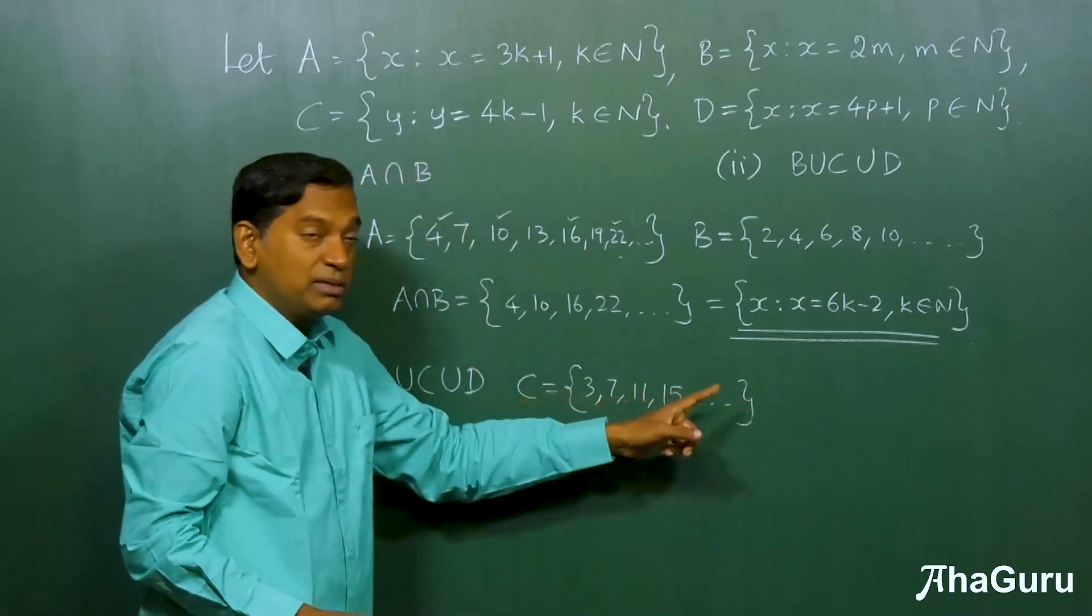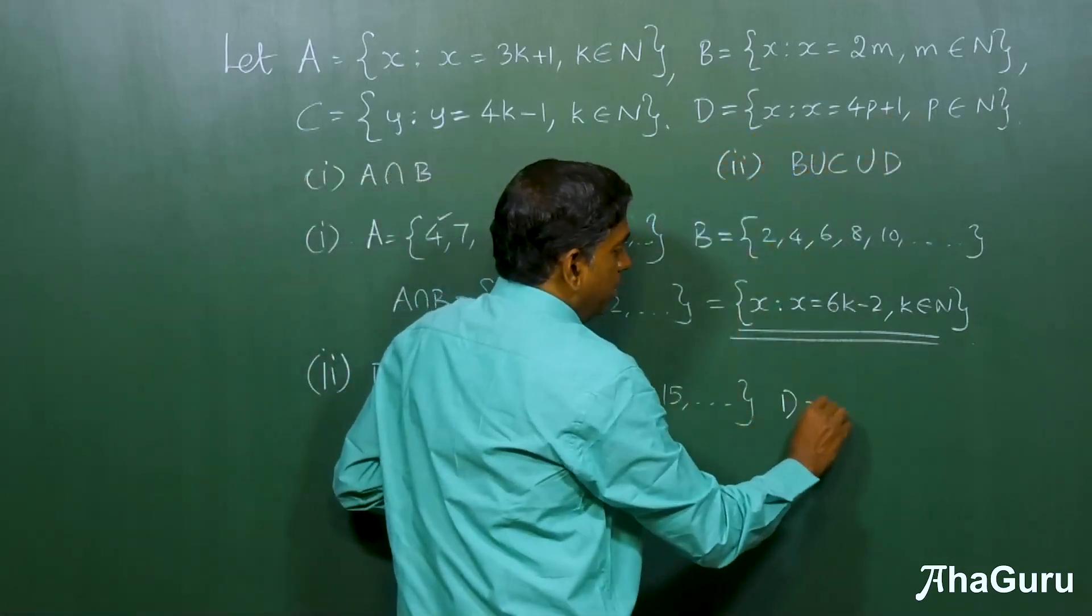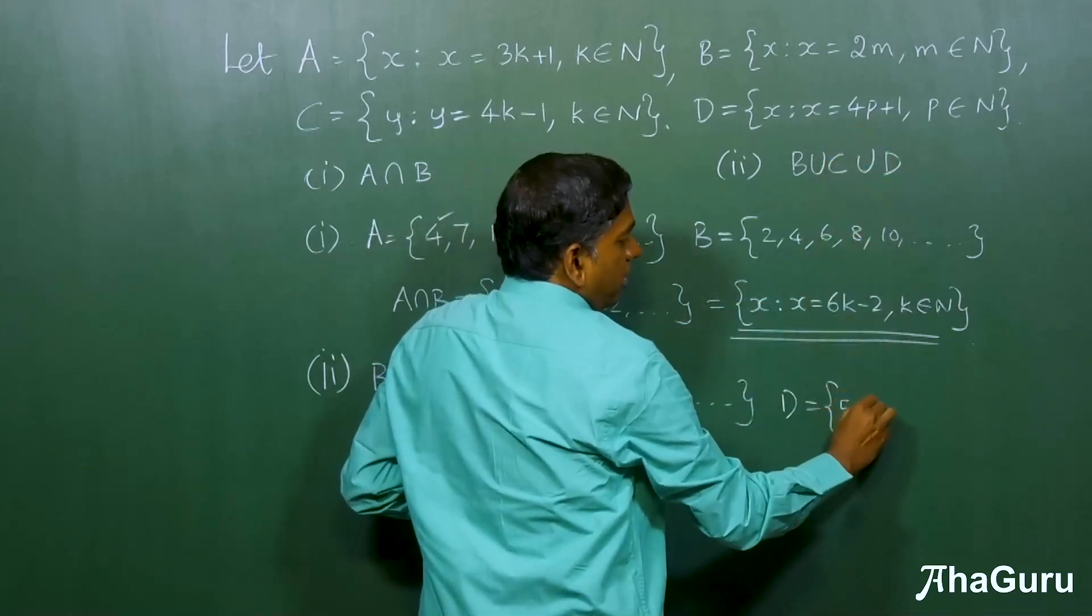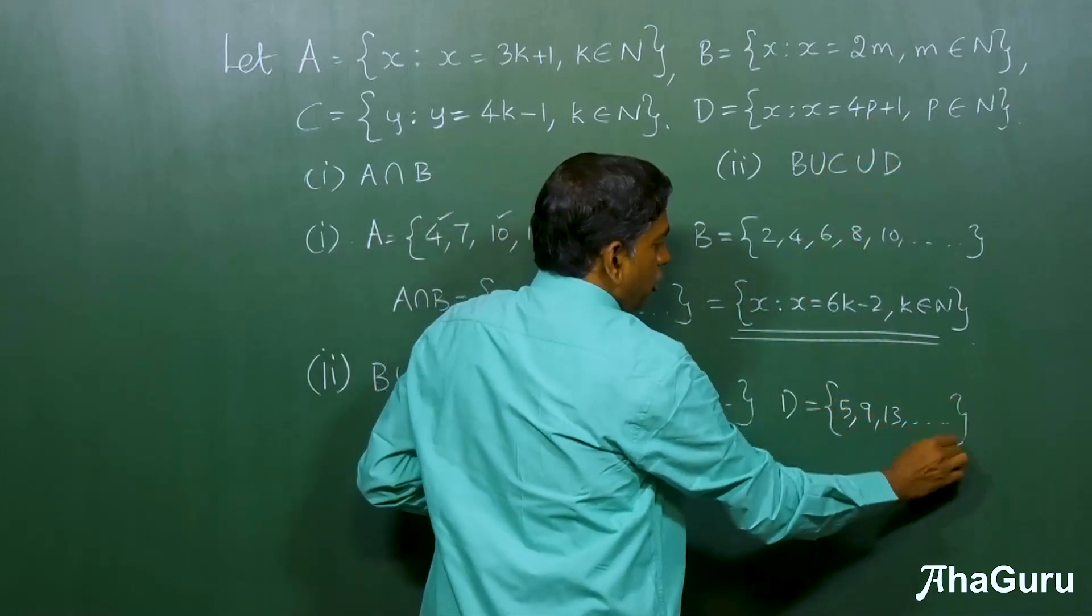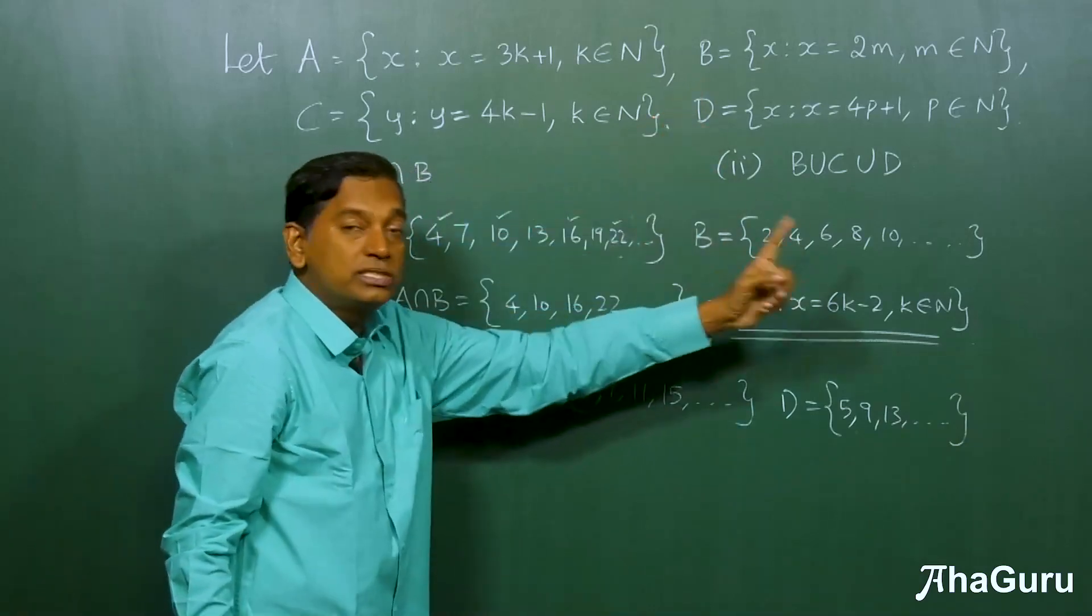1 less than multiples of 4. D is 1 more than multiples of 4. So, D will be 5, 9, 13, dot dot dot. Now, the question is, and B is already known, which is 2, 4, 6, 8, 10.